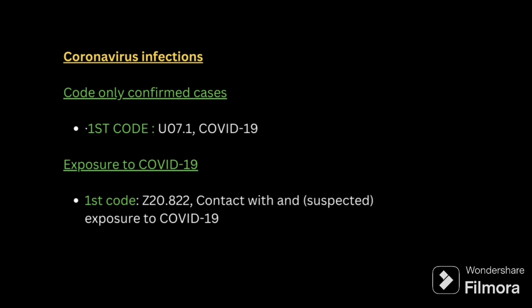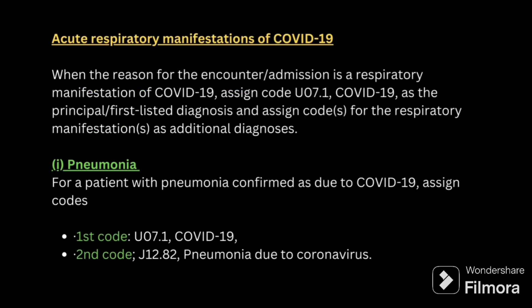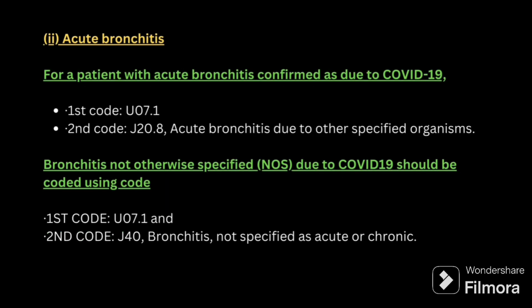Next: coronavirus. Confirmed COVID-19 is coded U07.1 as the primary diagnosis. For encounter for COVID-19 exposure, use the exposure code Z20.822. When COVID-19 is present with respiratory problems such as pneumonia, bronchitis, or respiratory failure, the first code is for COVID-19 and the second code is for the respiratory condition. For acute bronchitis related to COVID: first code COVID, second code acute bronchitis. For bronchitis not otherwise specified: first code COVID, second code bronchitis NOS.